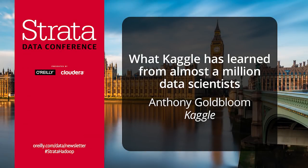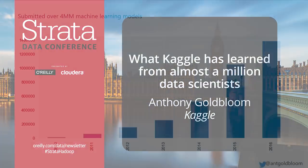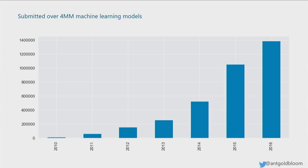We recently passed a pretty large milestone: we have now had more than 4 million models submitted to Kaggle competitions. That's a huge amount of machine learning. 1.4 million models were submitted to competitions last year, and it looks like we're probably on track to pass 2 million this year. That's a lot of machine learning.